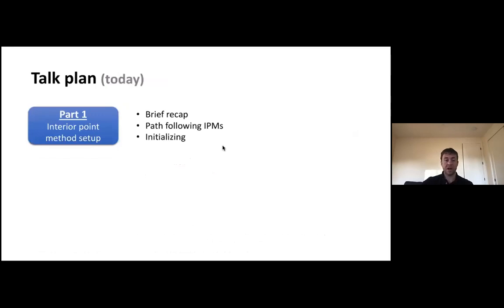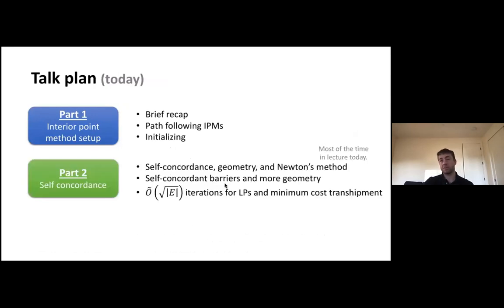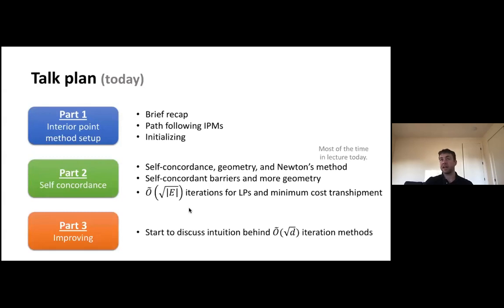I'm going to break the lecture into a few parts. First, a brief recap of the fundamental problems we're solving and some basics of interior point methods. The second part, which will be most of the lecture, will go through the fundamental theory of interior point methods and see the analysis for getting a root-n iteration algorithm for solving minimum cost transshipment, or root-n in the case of linear programs. At the very end, I'll convey some intuition about how we can improve these iteration complexities. Please stop me if you have questions throughout.